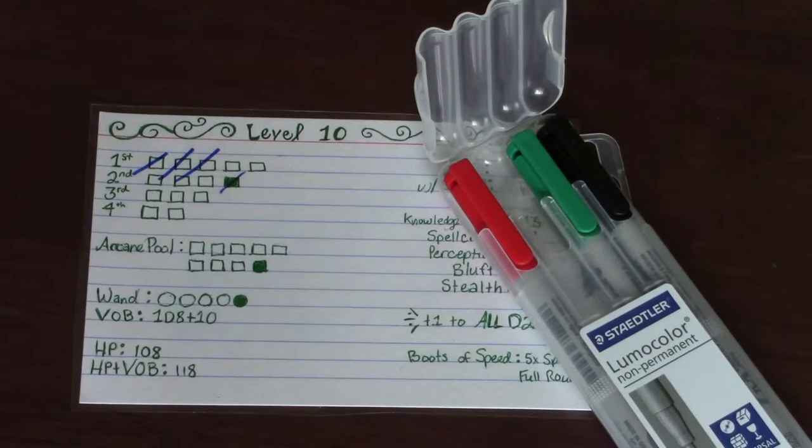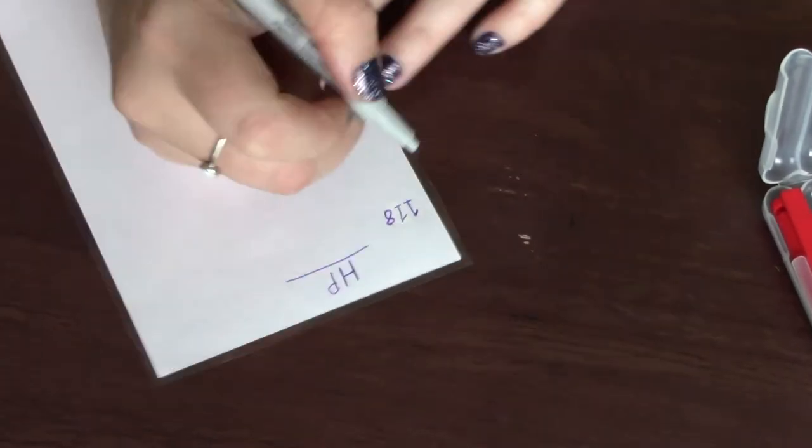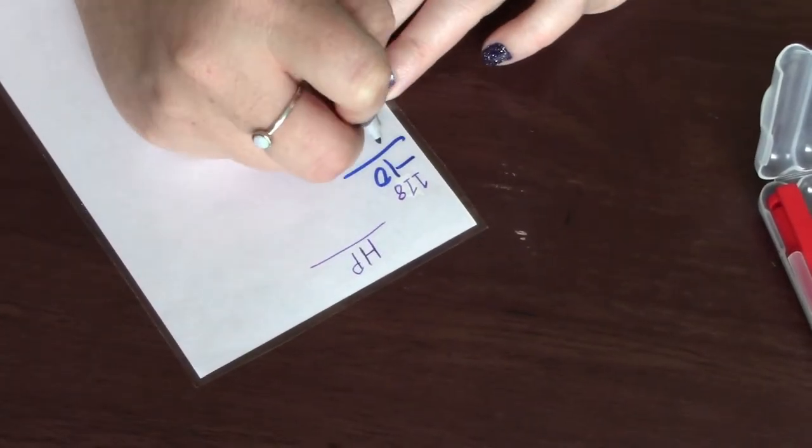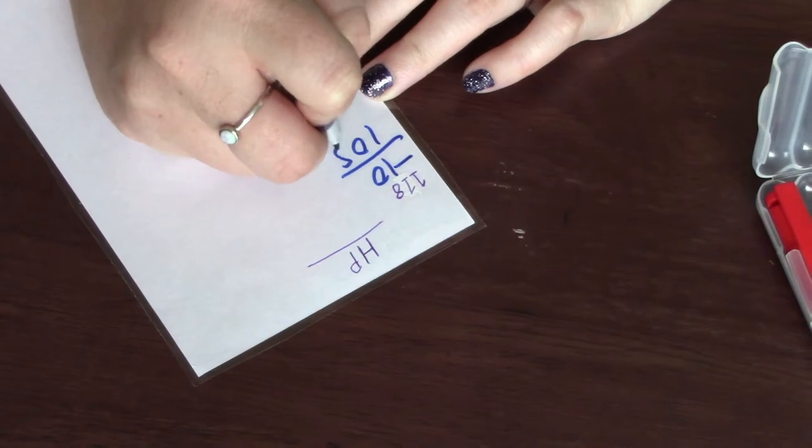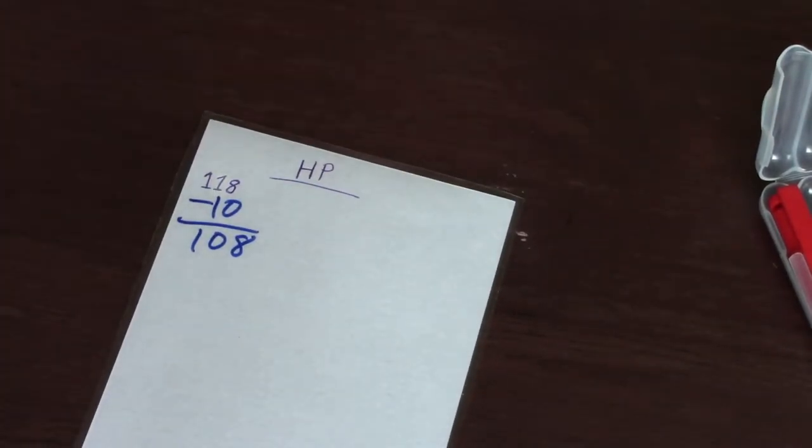And then when the game is over, I can just erase it. And then on the back, you know, I just put my HP. So as I go down, I can keep track of my HP on the back of it.